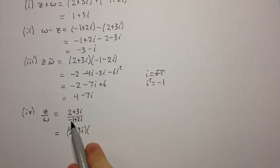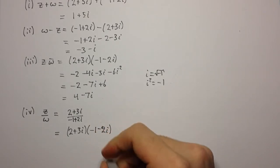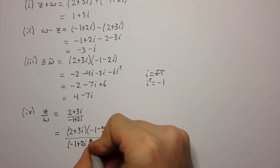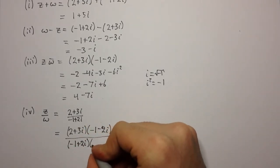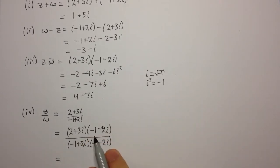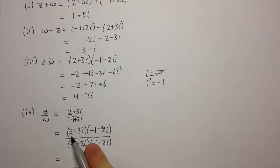If we multiply by the conjugate of the denominator, that's minus 1 minus 2i all over minus 1 plus 2i times minus 1 minus 2i. Conveniently, the previous part was actually computing this numerator. This is z times omega conjugate, or omega bar. We just worked that out to be 4 minus 7i.